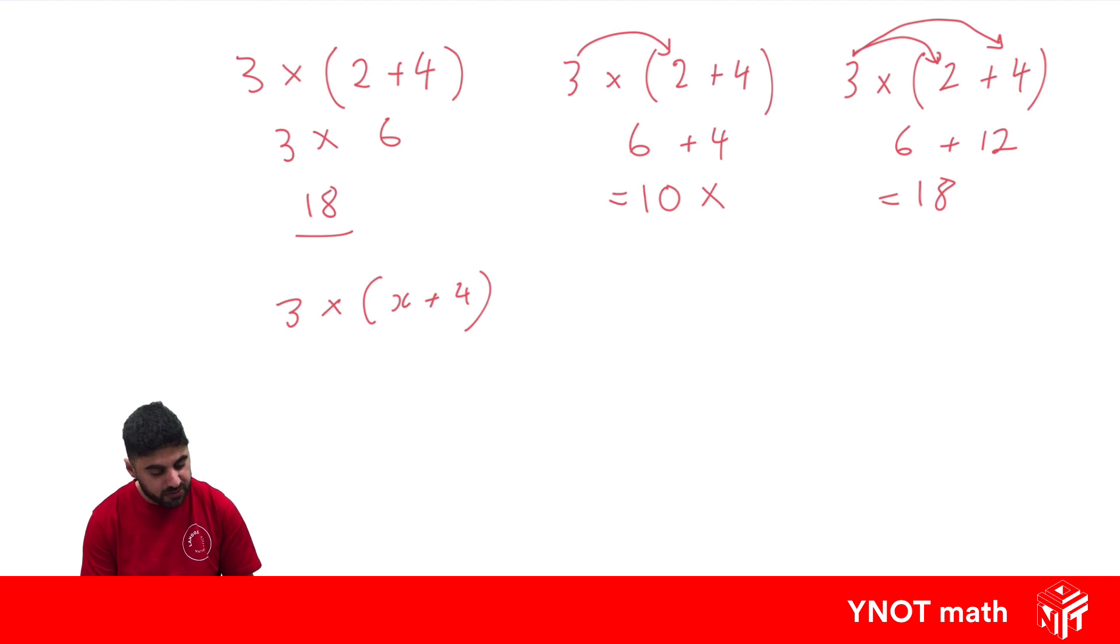But if we use our expanding brackets where we take the term out the front and multiply it by every term inside, we can write this a little nicer. We can do 3 times x, which is 3x. Then we can do 3 times 4, which is 12.